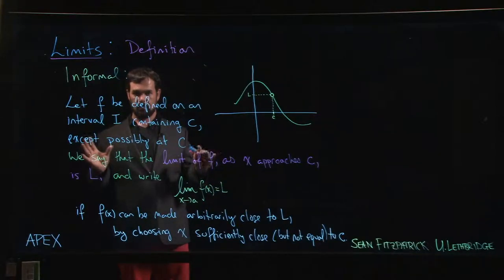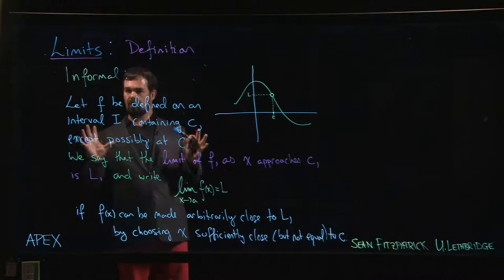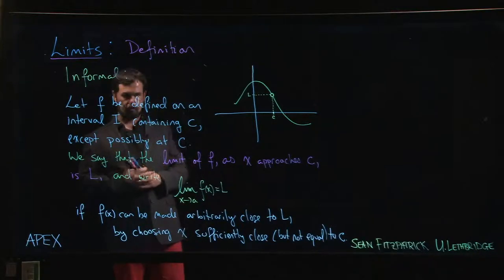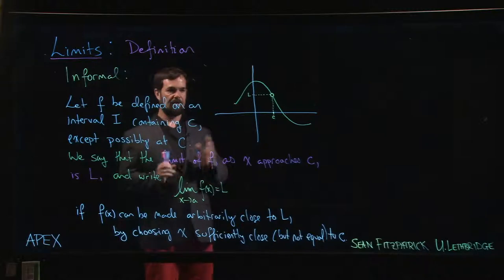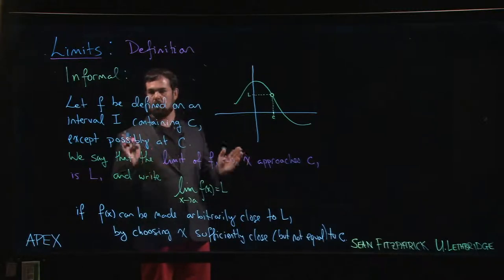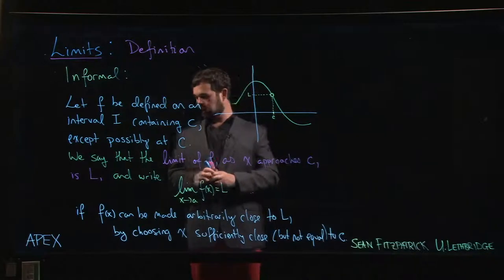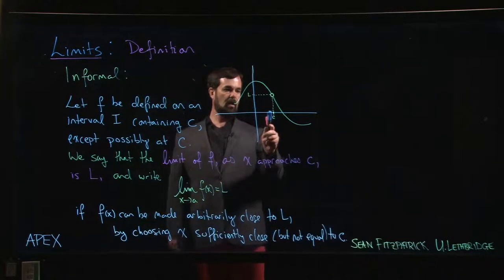Here is an informal definition - we're going to have to fix this, but we can start with this. We start with a function defined on some interval. We need an interval because we want to be able to look at values of f(x) on either side of this point C.